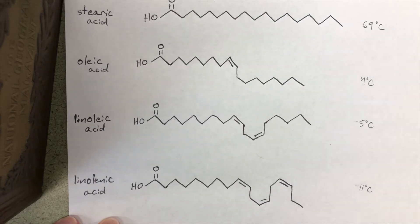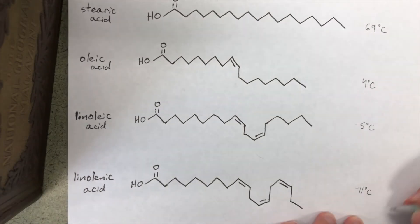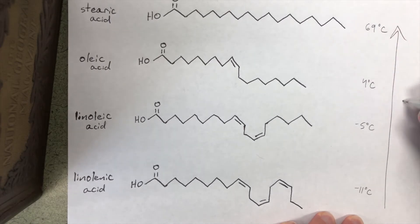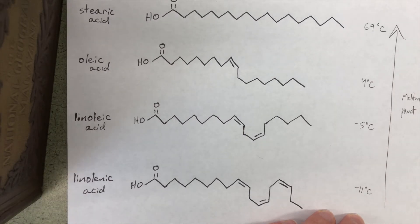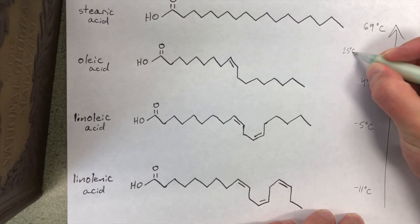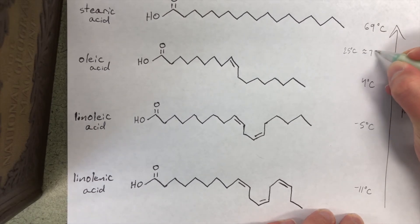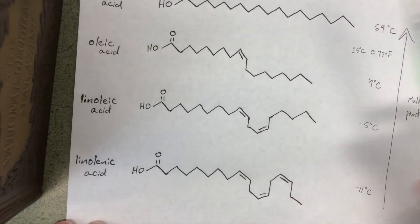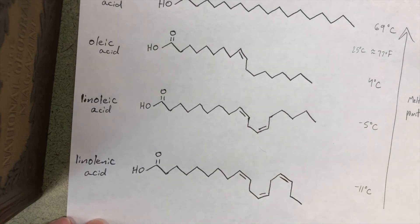And so that's basically why we see such a large spectrum in melting point. If we take typical room temperature to be about 25 degrees Celsius, which is around 77 degrees Fahrenheit, we can see that all of the unsaturated fats will have melted by the time we get to room temperature.